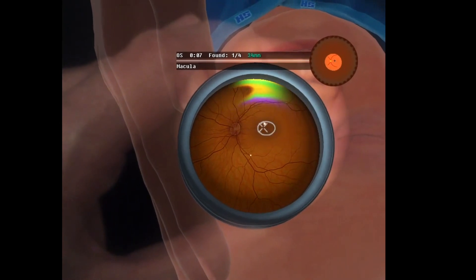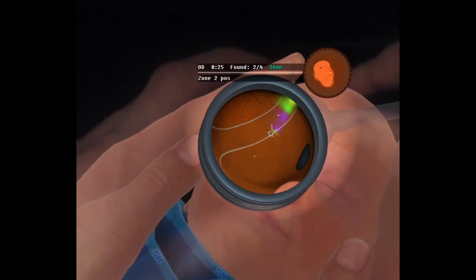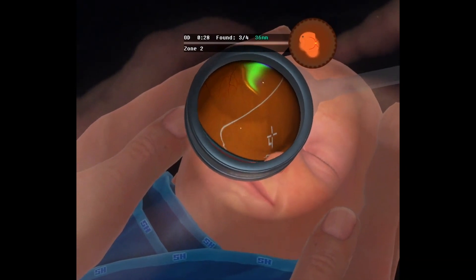The IC Indirect ROP teaches the main characteristics of ROP and how to recognize the different zones and stages.